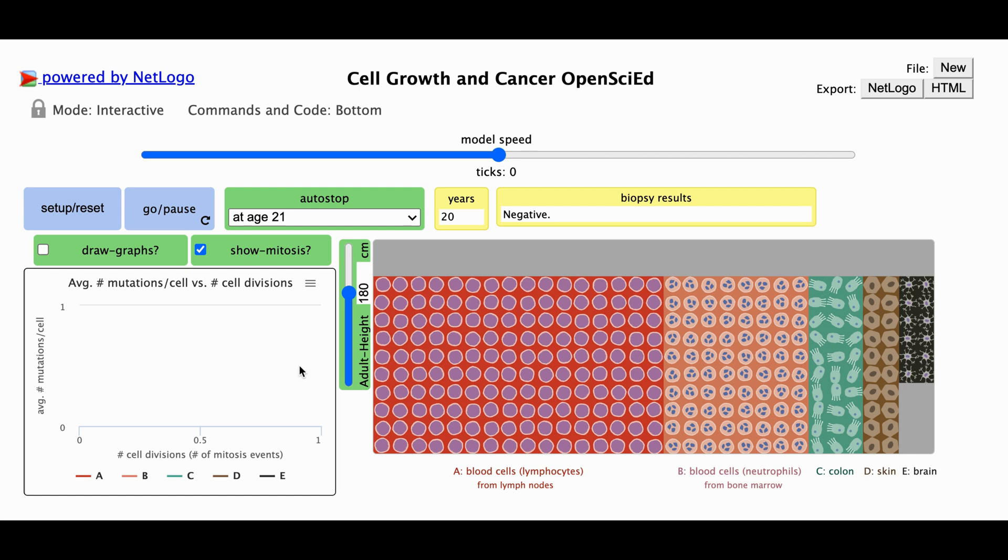Before you go off to do this investigation on your own, there are a few more sections I want to call attention to. The simulation is currently showing cells of a 20-year-old person and will automatically stop running when they reach age 21. We can change the auto-stop condition by clicking on the drop-down arrow here and selecting a different choice.